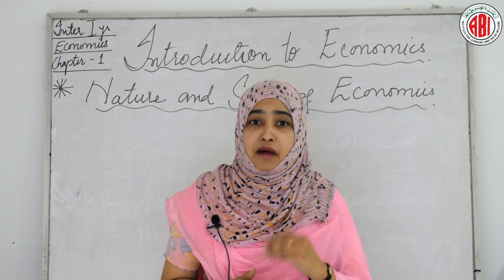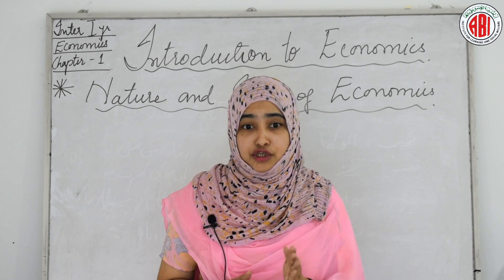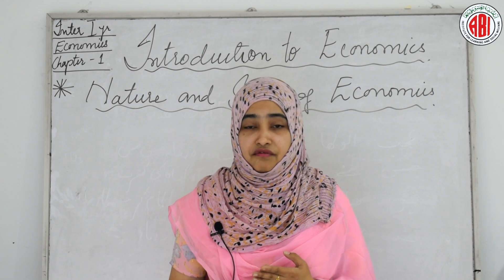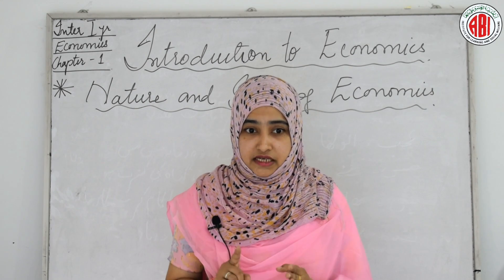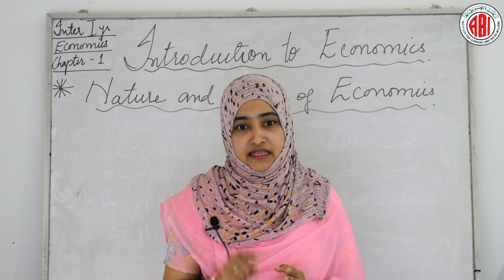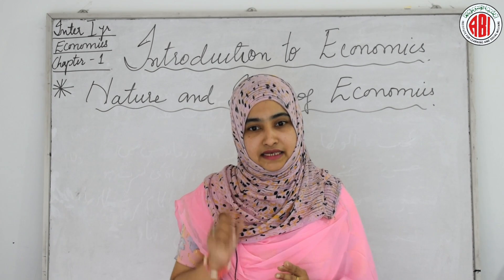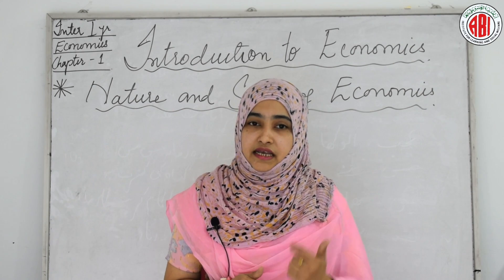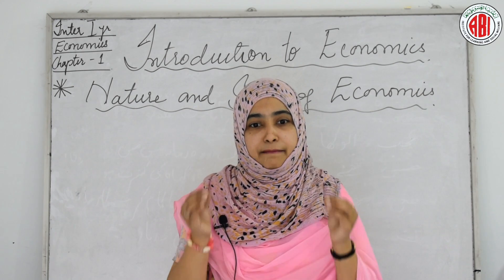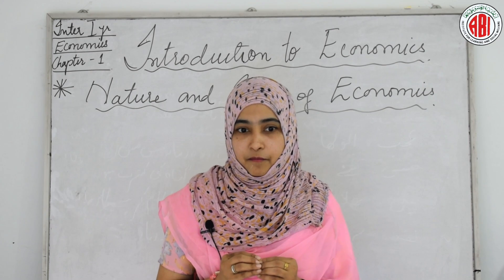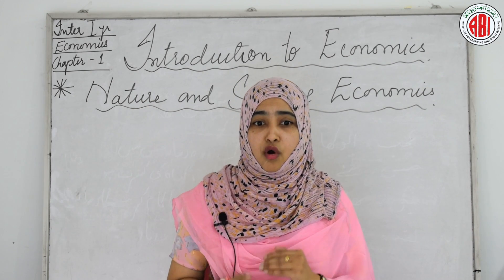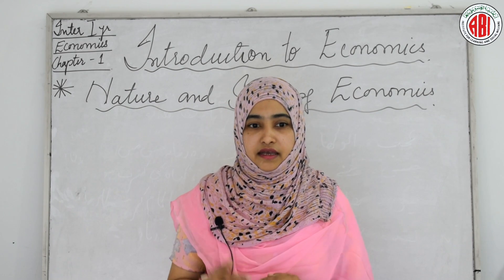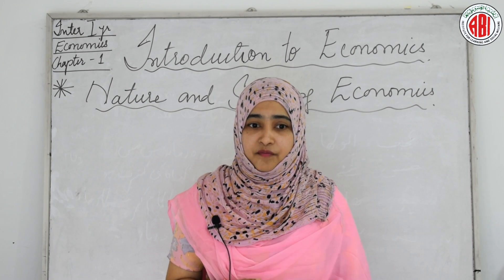The majority of economic thinkers from Adam Smith confined the subject matter as the study of the causes of material welfare or as the science of wealth, limiting it to consumption, production, exchange, and distribution of wealth. According to Robbins, economics is concerned with a special aspect of human behavior — allocating scarce means among competing ends.